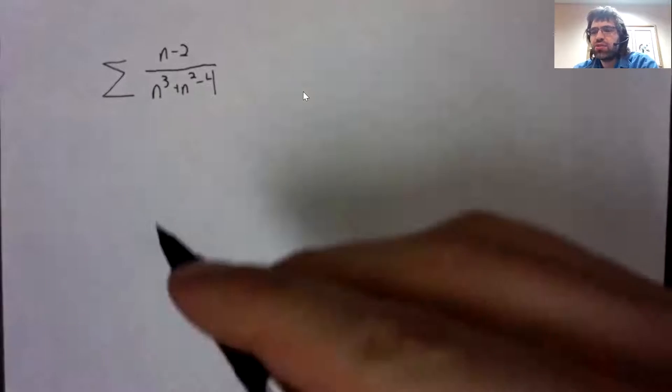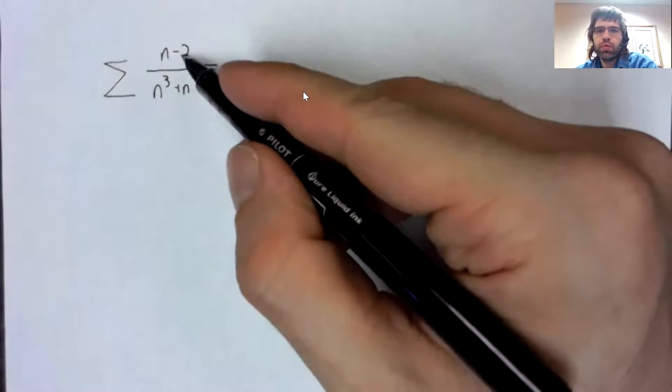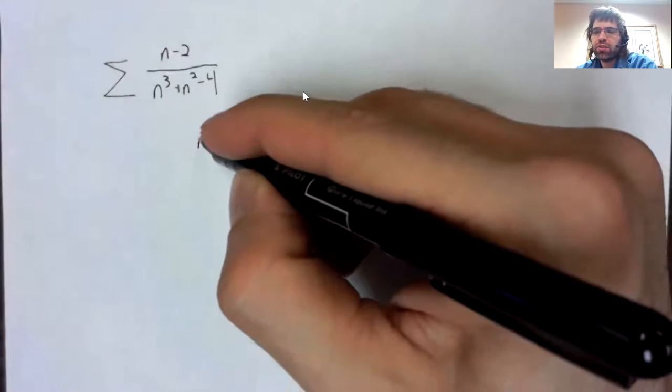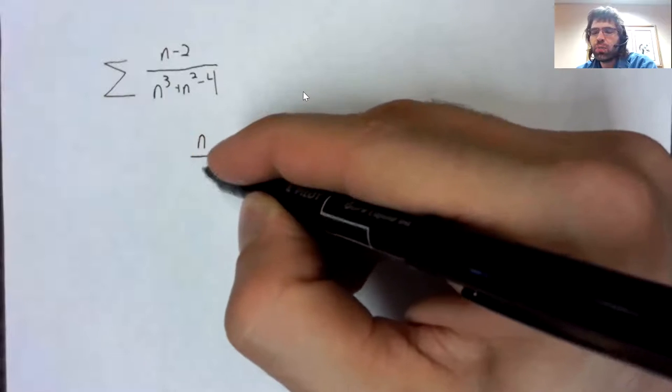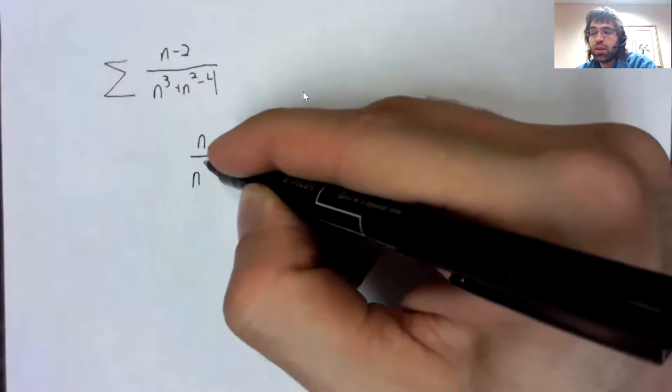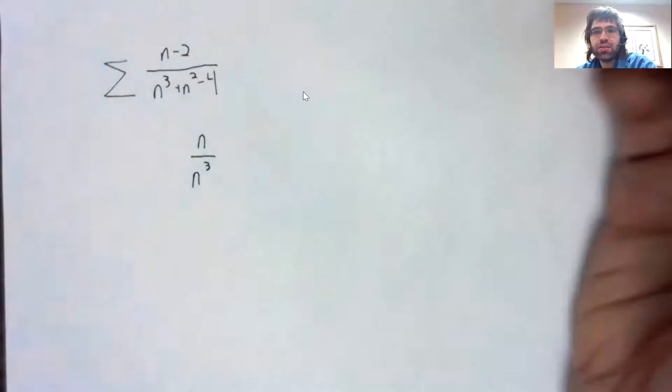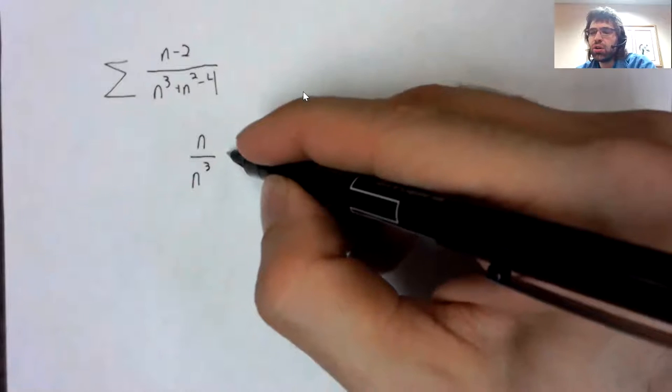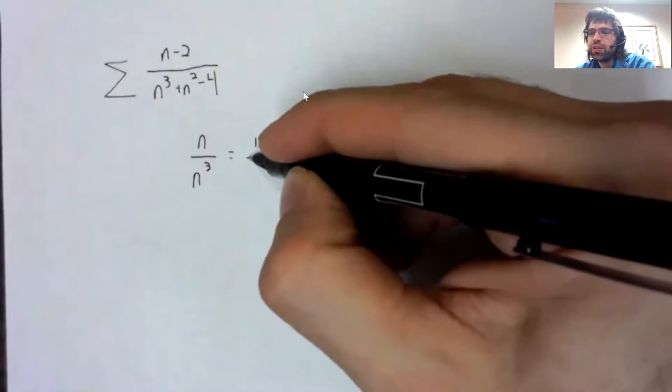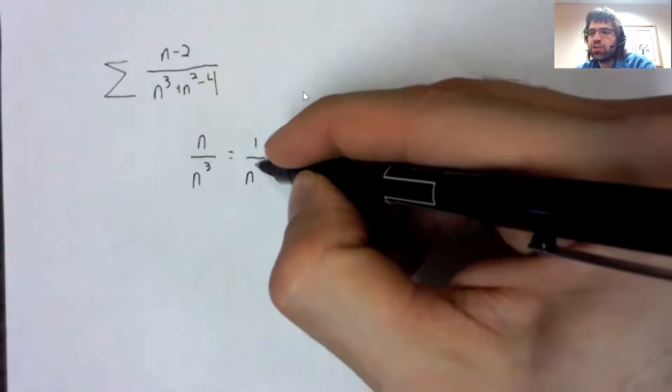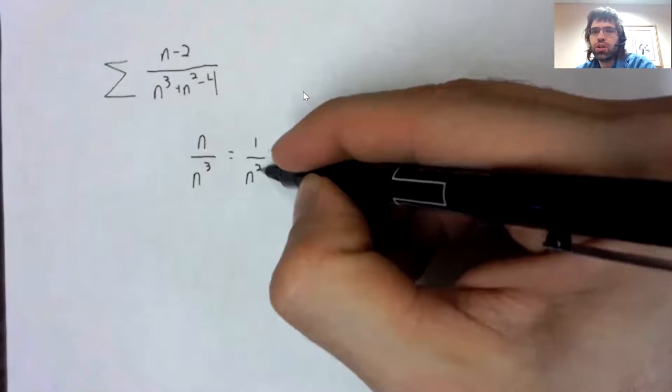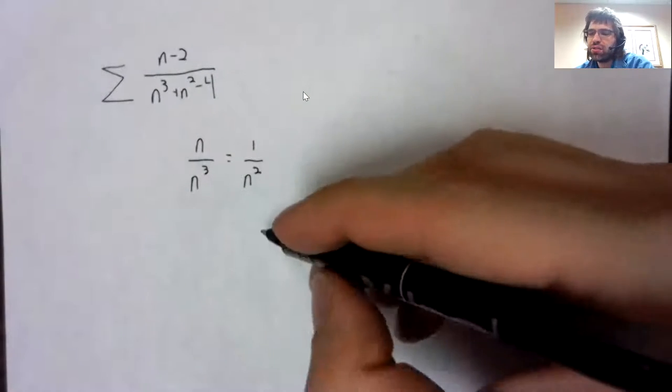As n gets big, the numerator will look like its leading term, and the denominator will look like its leading term. And this series should look like this.